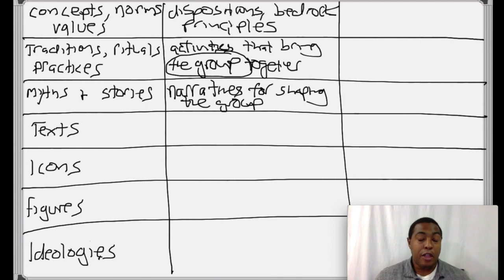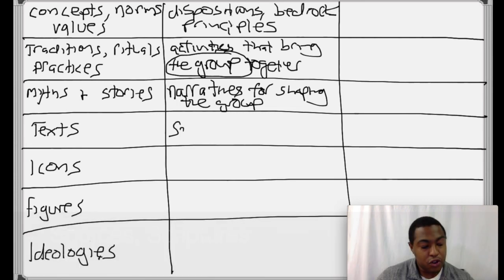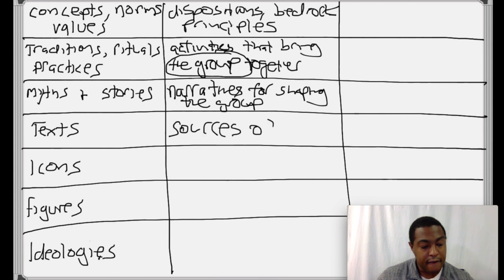Texts, I would say, are the sources of those myths and stories, traditions, rituals, and practices, concepts, norms, and values. Texts are sources of the above. And another word for text, especially in the context of religion, it's going to be scriptures. I like to define these as the texts that people read that also seem to read them back because these texts often take a life of their own. Scriptures seem to take a life of their own.